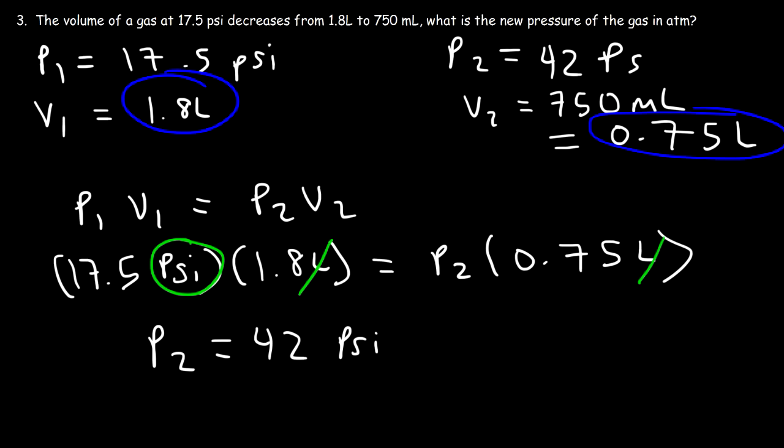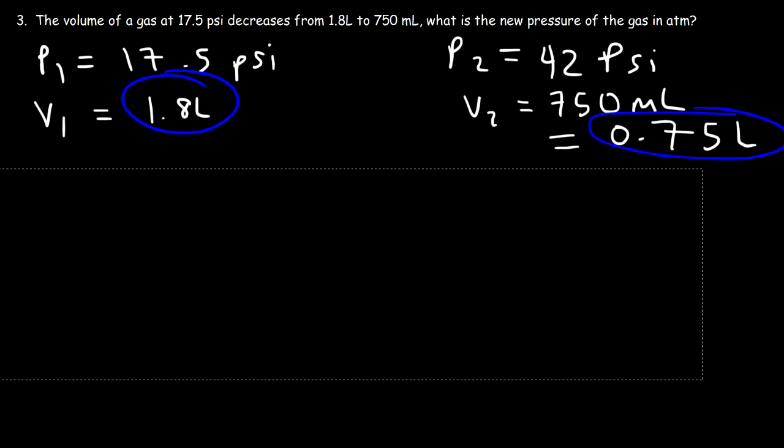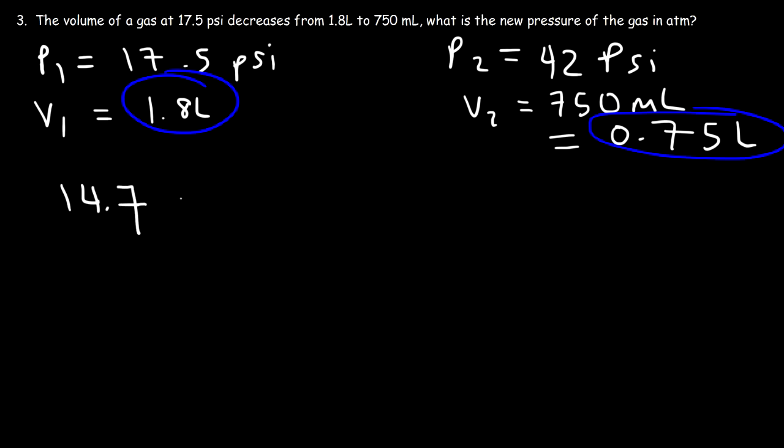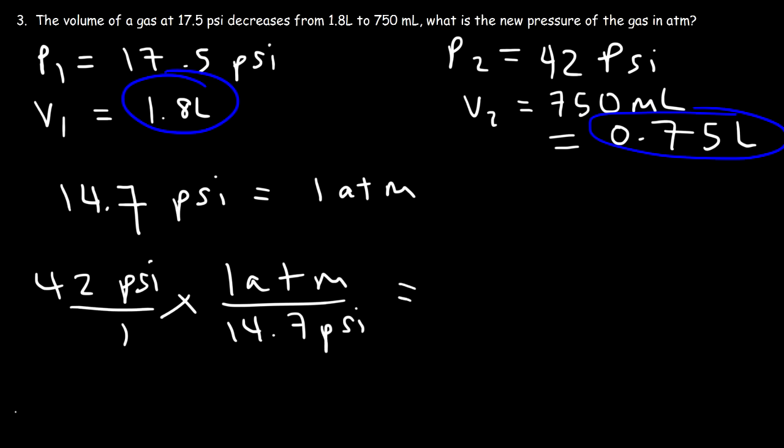So that's our answer. However, we need to change it to the right unit. So what is the conversion factor from psi to atm? 14.7 psi is equal to 1 atm. That's the conversion factor that we need to use. So starting with 42 psi, we can say 1 atm is equivalent to 14.7 psi. And we need to write it in such a way that the unit psi will cancel. So it's just 42 divided by 14.7. So the new pressure is about 2.86 atm. And so that's the answer.